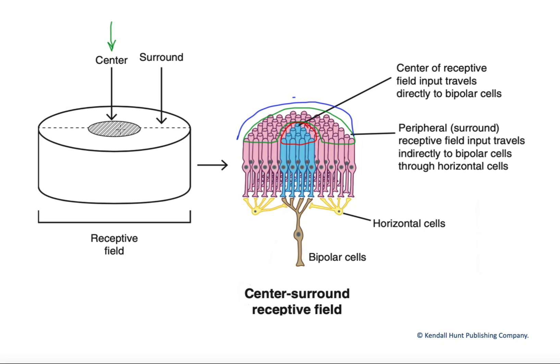By activating the center for an on-center cell and then inhibiting the periphery, what we get is an enhancement of contrast between light hitting those two areas.